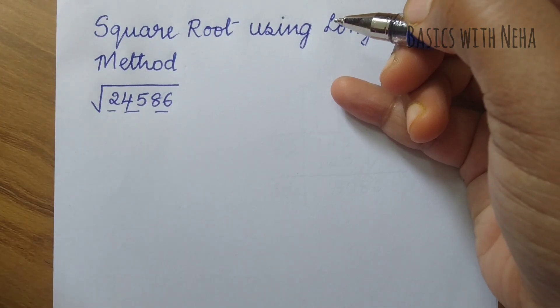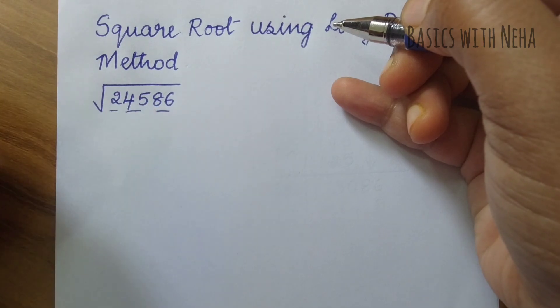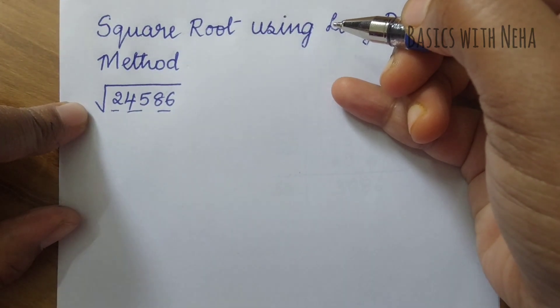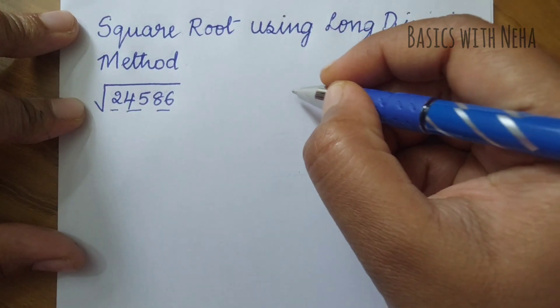The number of groups tells us how many digits will be there in the answer before the decimal place. So it's very clear that we'll have three digits in the answer part before the decimal place. Now let's do the long division method.